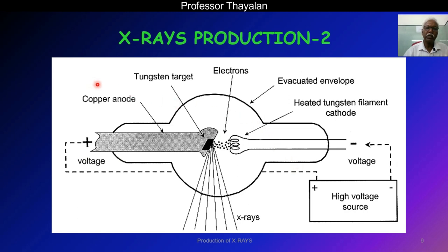This shows a simple X-ray tube apparatus by which we can produce X-rays. Let us see the various components of the X-ray tube. The glass envelope of the X-ray tube is kept under vacuum to avoid collisions between electrons and air molecules.